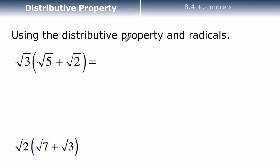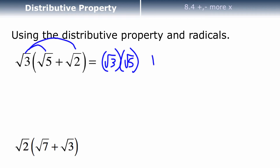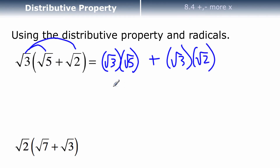Now sometimes we can also use the distributive property with radicals. So I can multiply this by this and this by this. Root 3 times root 5 would be root 15, plus root 3 times root 2 would be root 6. They're different radicands — can't do anything more. This would be where I would finish.